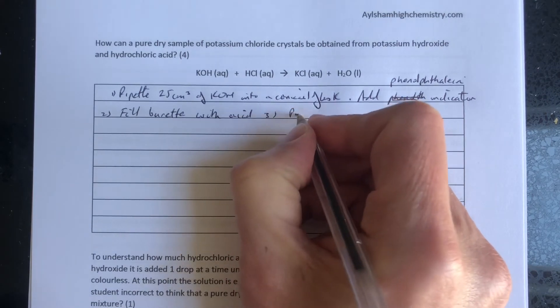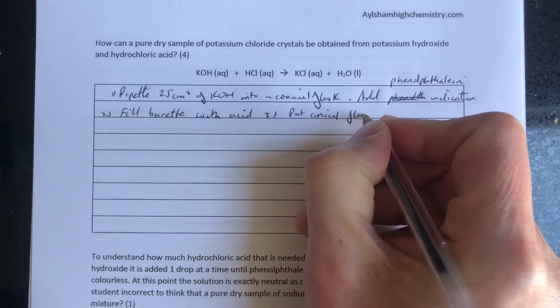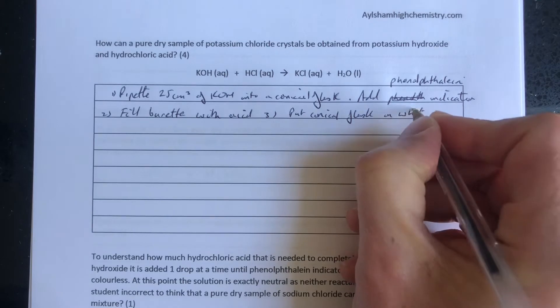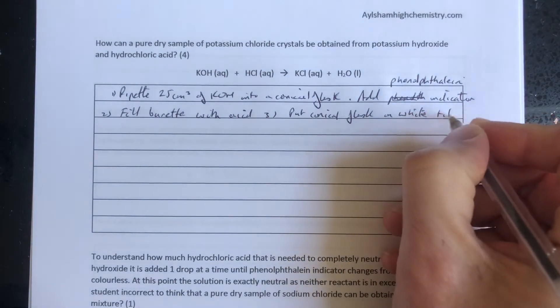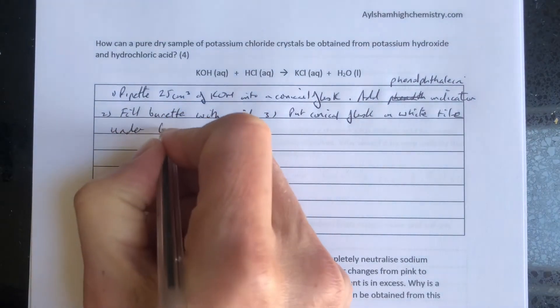Step three: put the conical flask on a white tile under the burette. This allows us to see the color change of the indicator on the white tile.